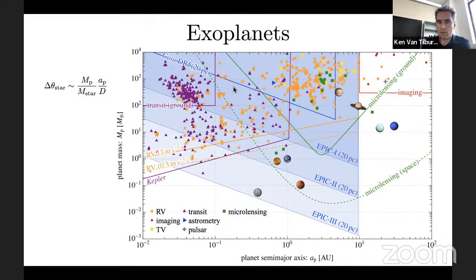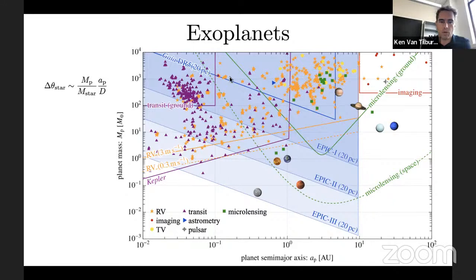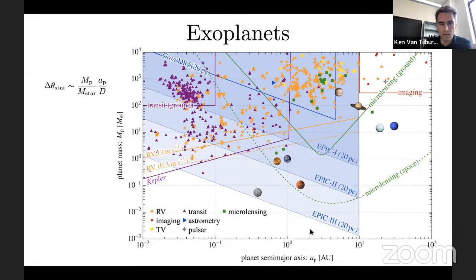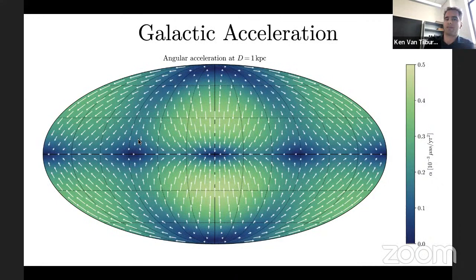The most compelling application is exoplanet detection via the astrometric wobble that a planet imparts on its host star. Gaia has some capabilities and has discovered one such previously unknown system so far, with more expected by Data Release 5. However, EPIC can do two to four orders of magnitude better on very nearby stars with Phase 3. By measuring the relative separation between the host star and a reference star very precisely, we can detect masses as low as one Earth mass around a sun-like star at 20 parsecs.